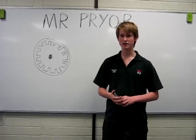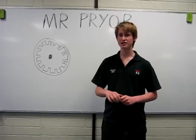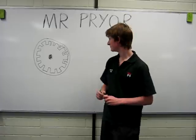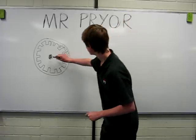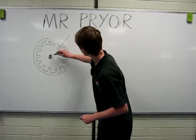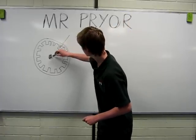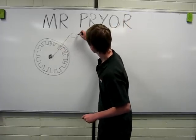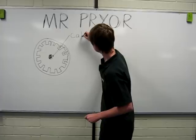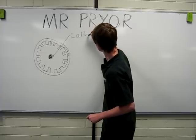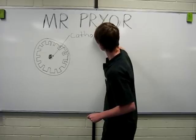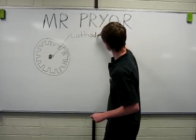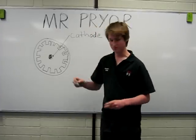At the core of the magnetron you have a cathode filament — this device here.